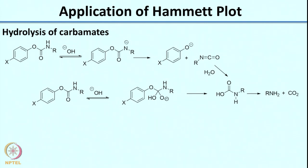While considering base-assisted hydrolysis of carbamate, one can imagine a mechanism where OH⁻ first deprotonates the NH to generate the anion. Once the anion is generated, you can imagine the anion pushing electrons in and this bond cleaving, generating a phenoxide. Then water attacks the carbon to give the hydrolysis product, which further decomposes to give the amine and carbon dioxide.